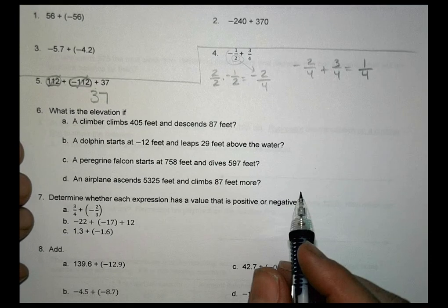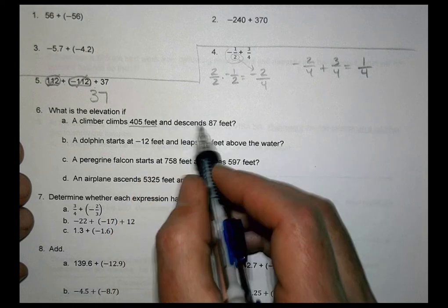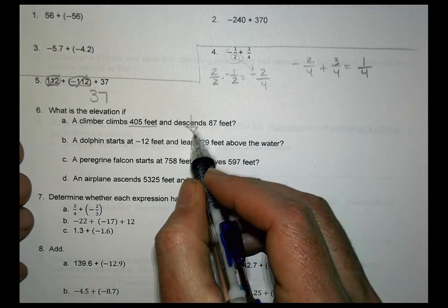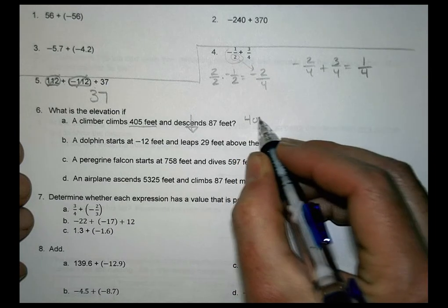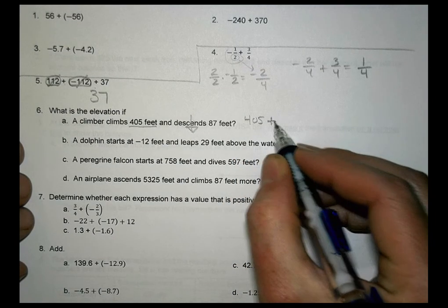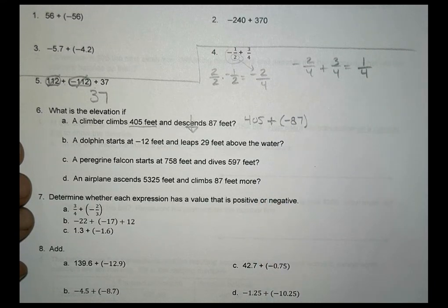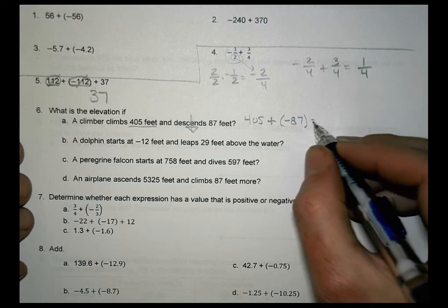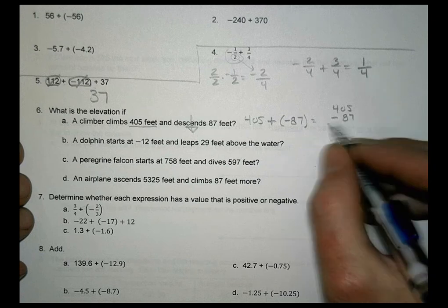Number 6, what is the elevation if a climber climbs 405 feet and then descends? It means they go down 87 feet. So we have 405, and the next thing he does, or she, we're going to add to what he does. We're going to descend, so negative 87. So to solve this here, I am going to do 405 and subtract 87.